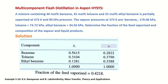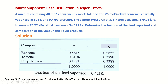In this tutorial we shall simulate multi-component flash distillation in HYSYS. This example is taken from a textbook. We have a mixture of 40 mole percent benzene, 35 mole percent toluene, and 25 mole percent ethyl benzene. This mixture is partially vaporized at 373 Kelvin and 90 kilopascal.